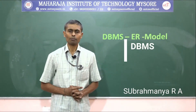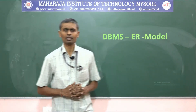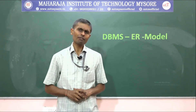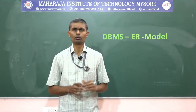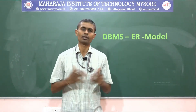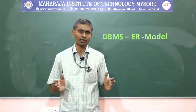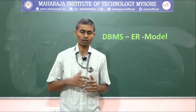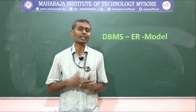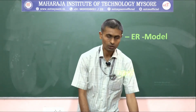Good morning all. In the previous session, we discussed about the ER model. There we have seen the plenty of notations which are used in the ER diagrams — how to represent an entity type, how to represent an attribute, and how to represent the different kinds of attributes. We have seen how to represent a composite attribute, derived attribute, stored attribute, key attribute, multi-valued attribute, and all.